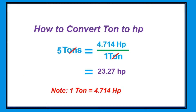Let's proceed to conversion from ton to horsepower. Note: one ton equals 4.714 horsepower. For example, 5 tons times 4.714 horsepower per one ton — we cancel the tons — so the answer is 23.25 horsepower. This is equal to 5 tons.